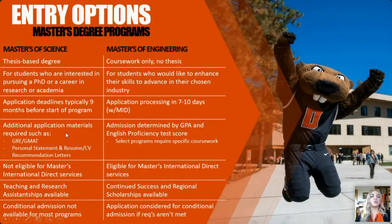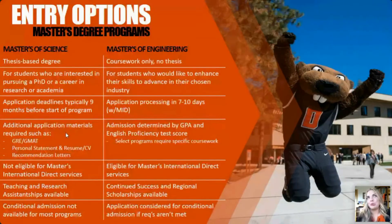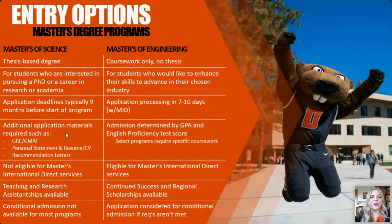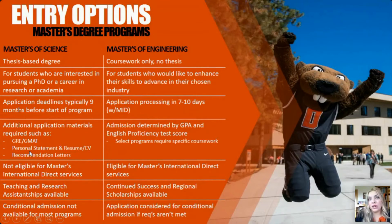For the thesis-based degree, you will typically need to submit the GRE or GMAT, though it depends on the program. For example, the computer science program no longer requires the GRE — this is new since COVID. You can still submit your score if you've taken it, but it's not required for computer science specifically. You'll also need a personal statement, resume or CV, and usually three letters of recommendation. There's a lot that goes into this application, which is why it takes the department a long time to review.